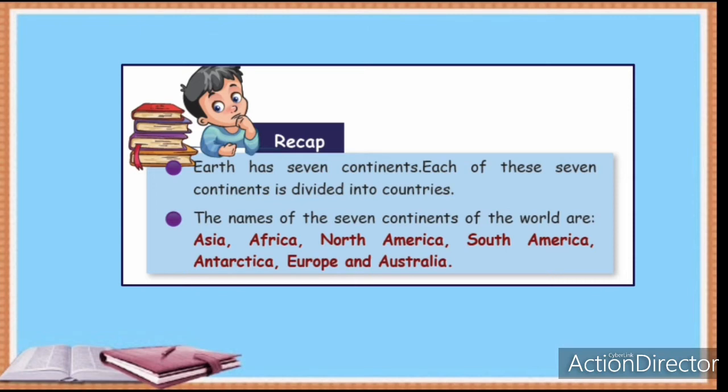South America lies mostly in the southern hemisphere, with a small part in the northern hemisphere. The Amazon is the largest river by volume, though it is the second longest river in the world, and it is located in South America. Brazil is in South America and is the largest coffee producer in the world.